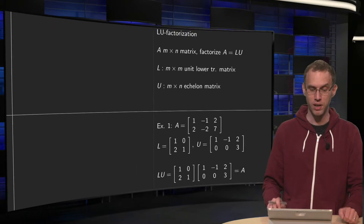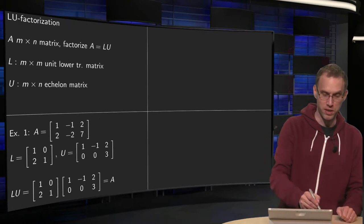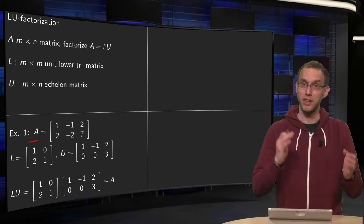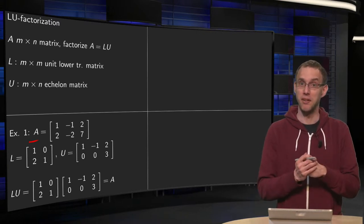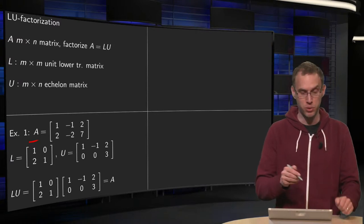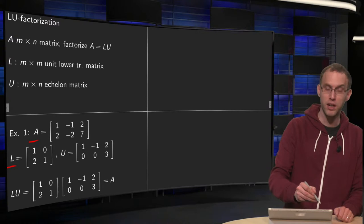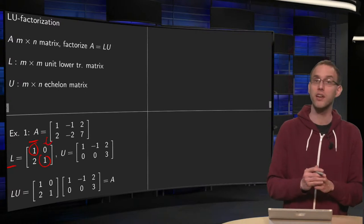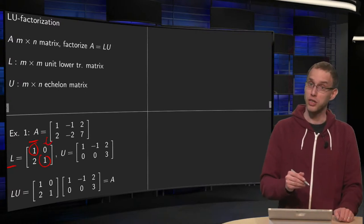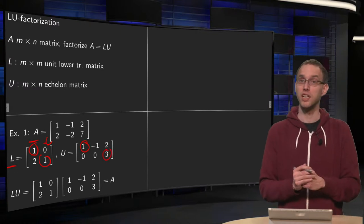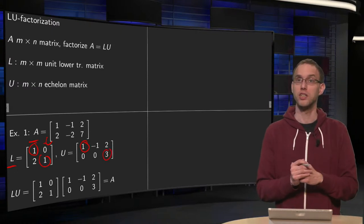So how does that look like? For example, if we have this matrix A over here, we can write A as L times U. L and U are already given here, we will learn later how to find them. We can write A as L times U, where L is over here, so it is unit and lower triangular, so we have zeros above the diagonal. And U is an echelon matrix, as you see the pivots are over here. So U is an echelon form, not a reduced echelon form.